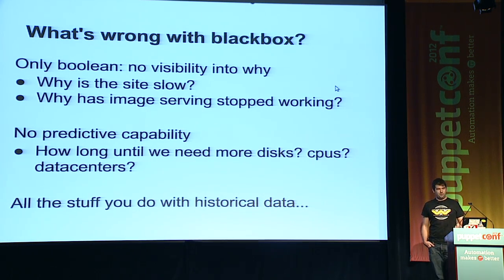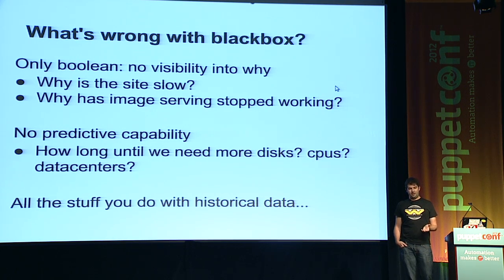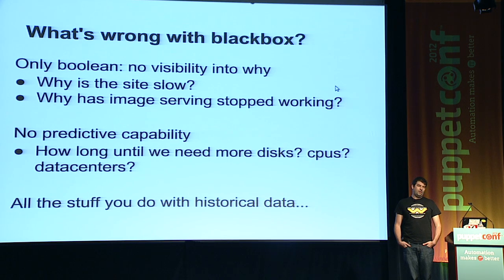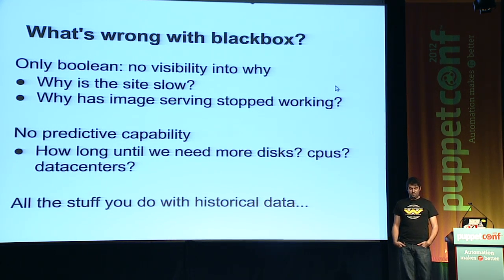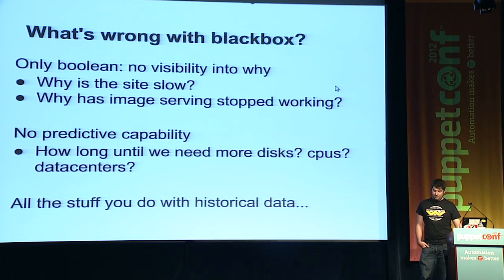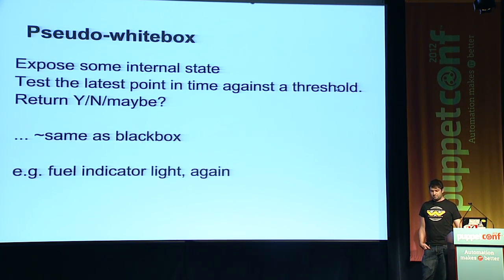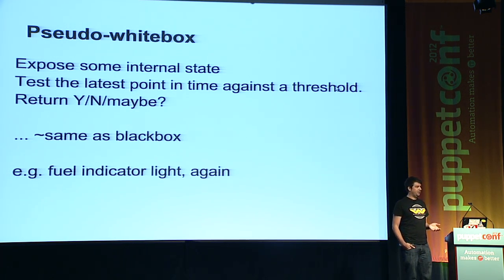So what's wrong with the black box testing alone? Well, it's only a Boolean state. Nagios is kind of a trinary state. You get to know that something is wrong, but not really a lot of detail about why. And you don't really have any predictive capacity. You don't really get to say, how long is it going to be until we run out of disk? How do we do our capacity planning? So all the stuff that you can do with historical data is not really readily available to you as a check script.